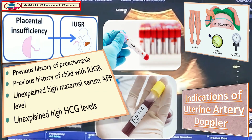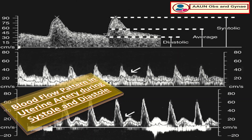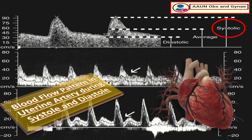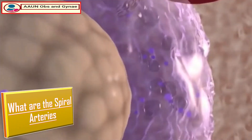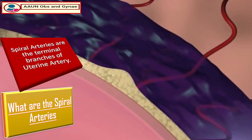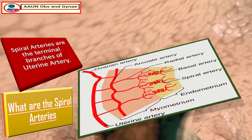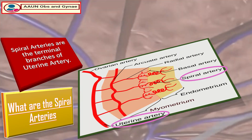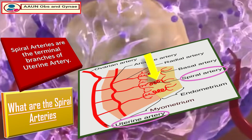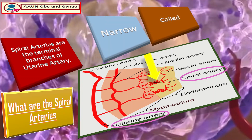During systole, blood flow is very fast and depends upon the contractile ability of the woman's heart. During diastole, the flow pattern depends upon the terminal vessels' vascular resistance, mainly the spiral arteries. The spiral arteries are the terminal branches of the uterine artery, as shown in the image — this is the uterine artery and this is the spiral artery.